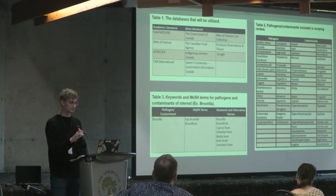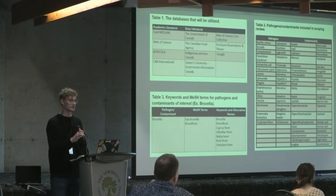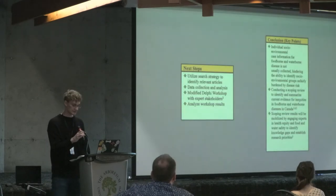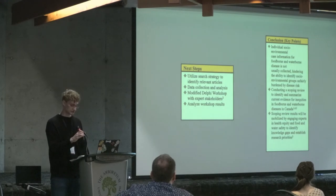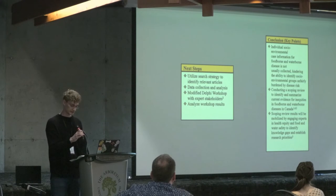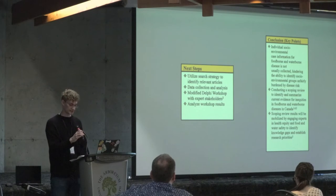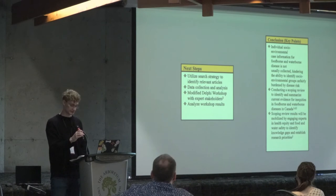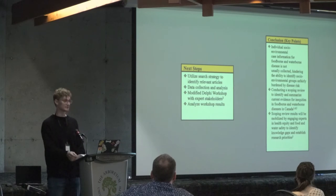As an example of how a pathogen will be identified in our scoping review, I have listed the MeSH terms and keywords for Brucella. The next steps are to use our developed search strategy protocol on our selected databases to retrieve relevant articles, then extract and analyze the data according to socio-environmental stratifiers. Using these results, we will develop and conduct our workshop for stakeholders using a modified Delphi approach, and the results of this workshop will help identify key research priorities in future areas of action.